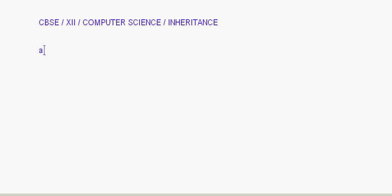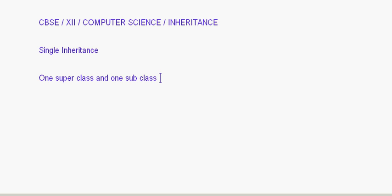Today let's look at single inheritance and multiple inheritance. Let's take up the syntax of single inheritance first. Single inheritance basically means there is one super class and one sub class, or we can say one base class and one derived class.